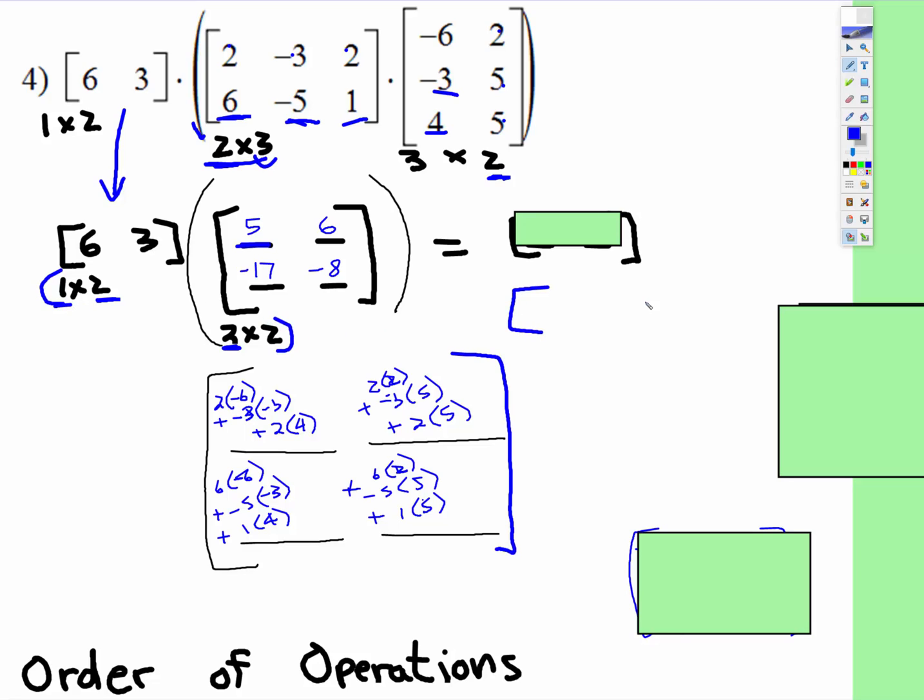So one row by two columns. So it'll be for this spot right here, it'll be six times five, which is 30 plus three times negative 17, which is negative 51. You're going to add those two things together. Then for this spot right here, it's six times six, which is 36 plus three times negative eight, which is negative 24.